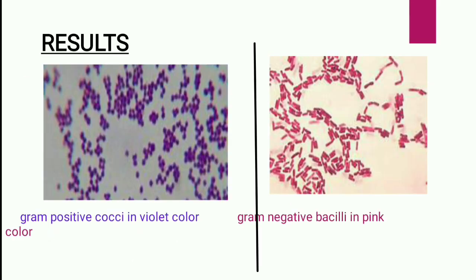The result: gram-positive bacteria appear violet in color and gram-negative bacteria appear pink in color. Mostly gram-positive are cocci and gram-negative are bacilli.